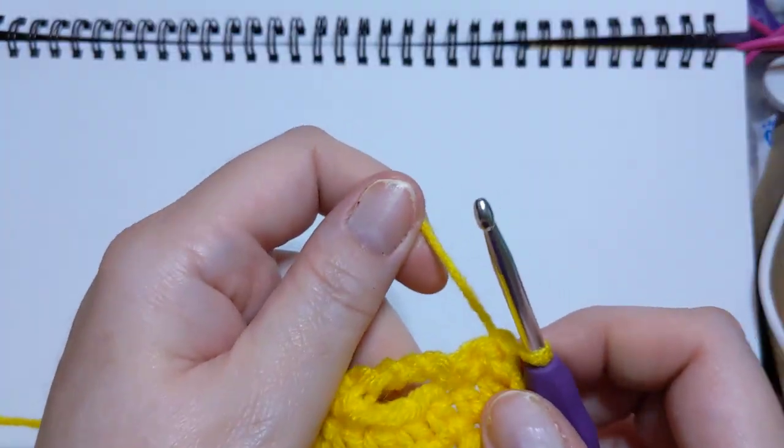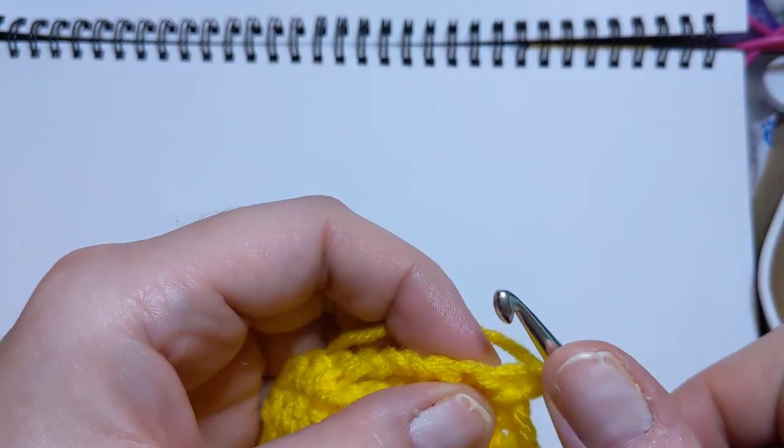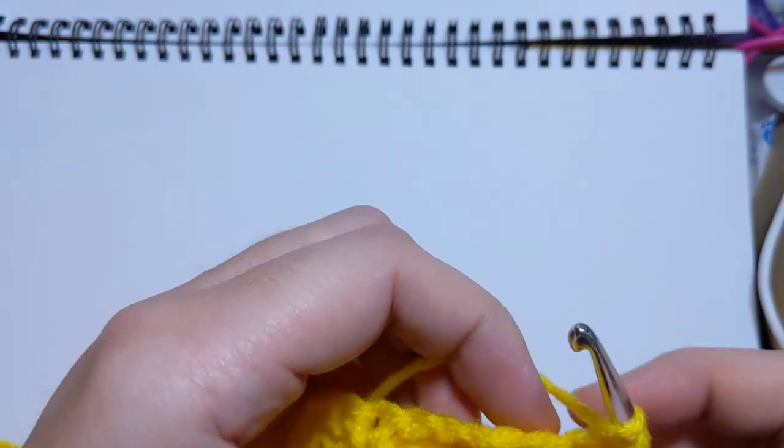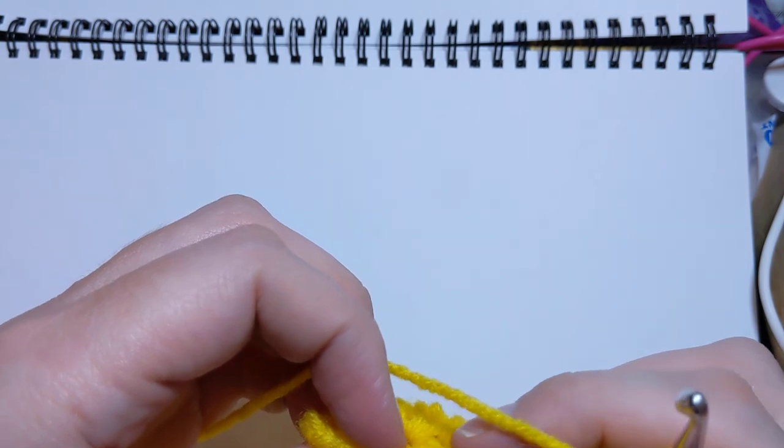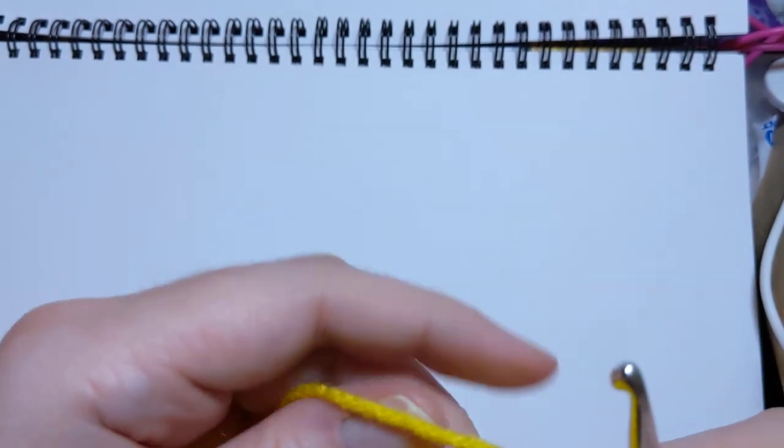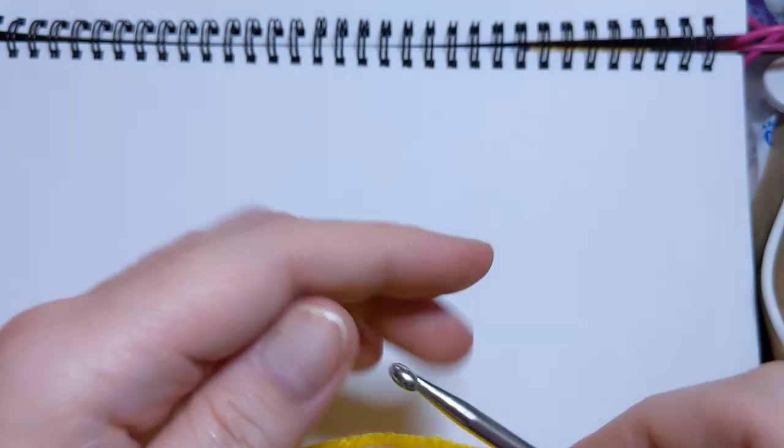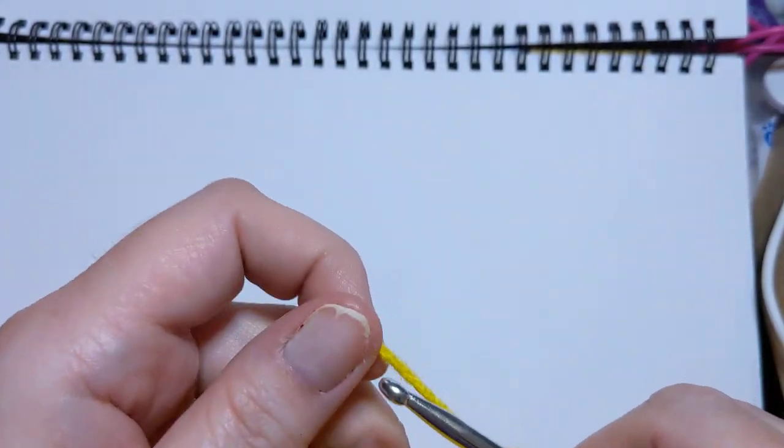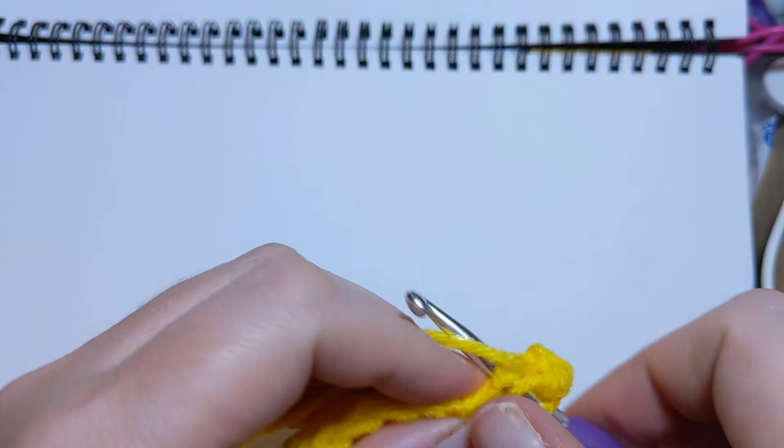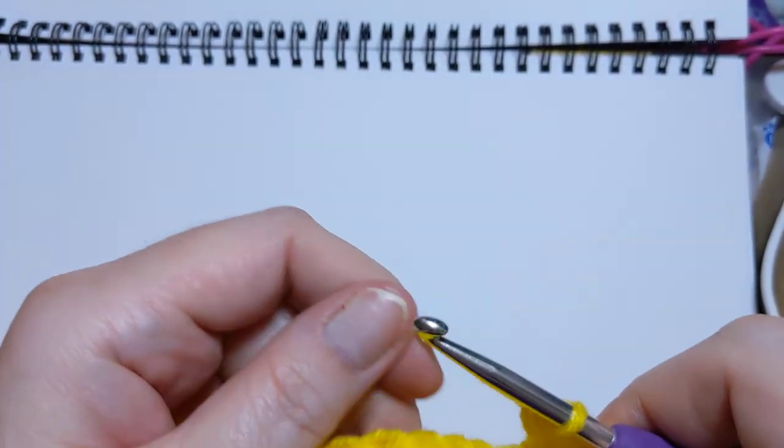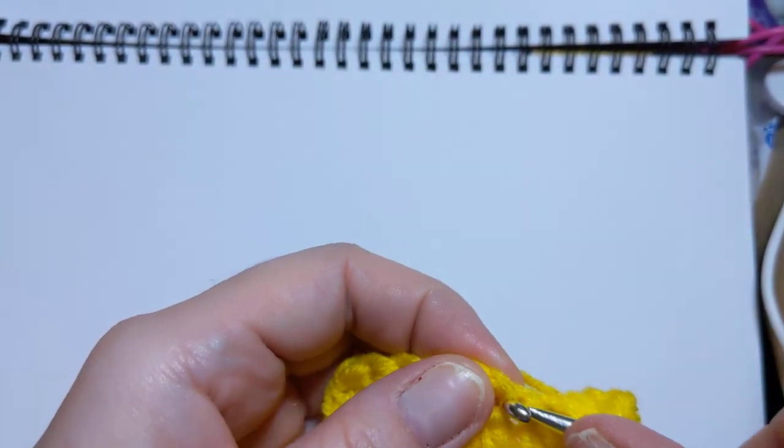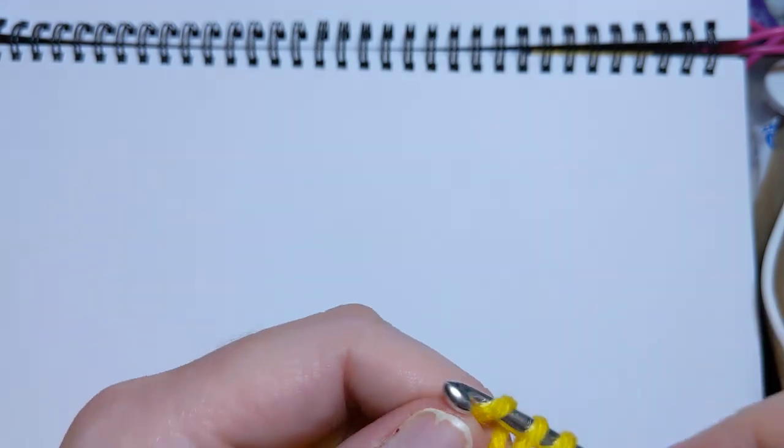We're going to turn our work. Pull out a little more yarn, of course. And we're going to half double all the way across. Okay. All right. Just making sure I had all of my stitches sorted there. One. Two. Three.